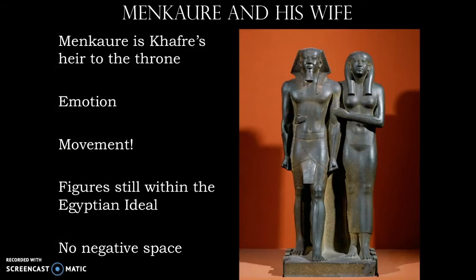After Khafre, we have Menkaure, who also has one of the three great pyramids. What's exciting about this sculpture is that we have a little bit of emotion shown — something we won't see again until the very end of the Egyptian civilization with Akhenaten. We also have an indication of movement, where both the king and queen have one foot in front of the other. Instead of a very solid sculpture, the Egyptians are trying to create a little dynamism here — though that won't be perfected until the Greek civilizations. They're still created within the Egyptian ideal, and once again there is no negative space. Some argue the sculpture wasn't completely carved, but because the material is so difficult, it wouldn't be uncommon just to leave it.